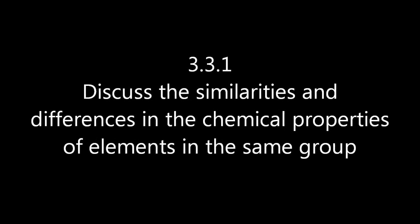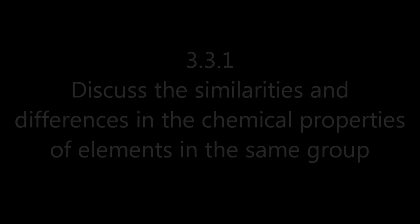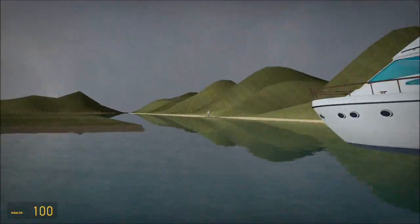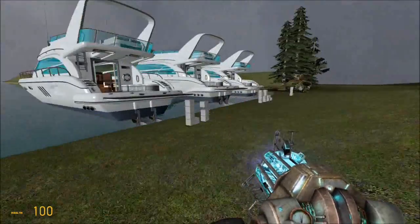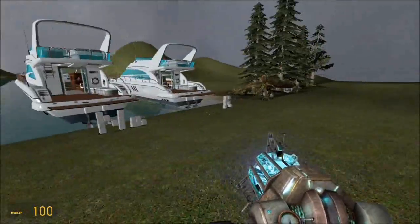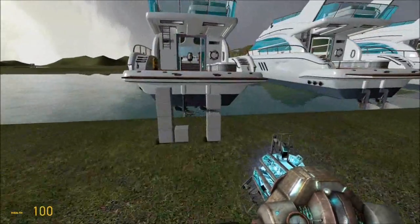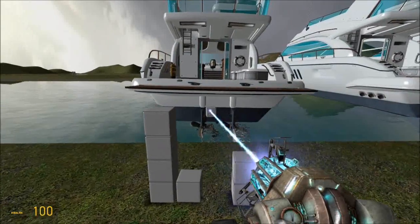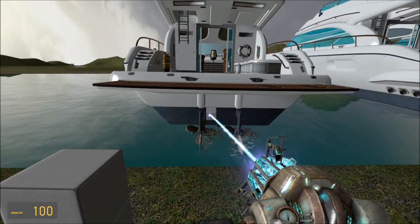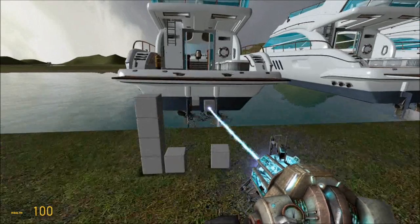Discuss the similarities and differences in the chemical properties of elements in the same group. There is Dr. Atkinson. Group 1 and Group 7 are the ones the IB specifically asks about. So Group 1, that's the alkali metals, one valence electron. And we're going to look at lithium, sodium, and potassium and their relative reactivity with water.